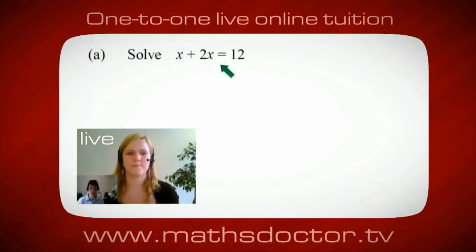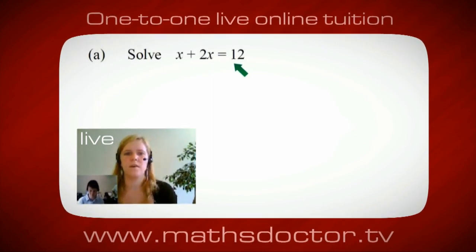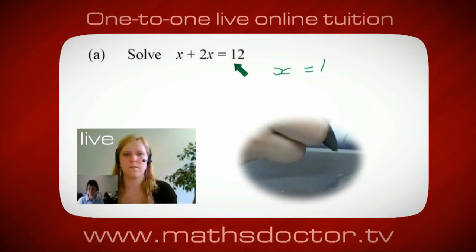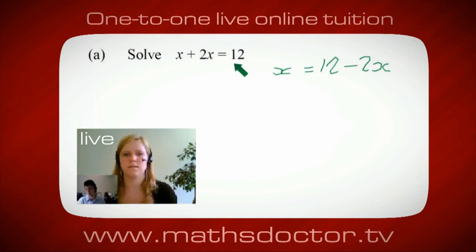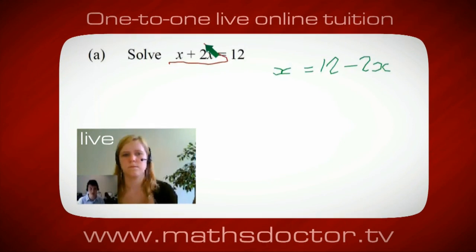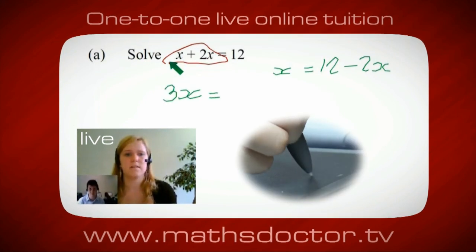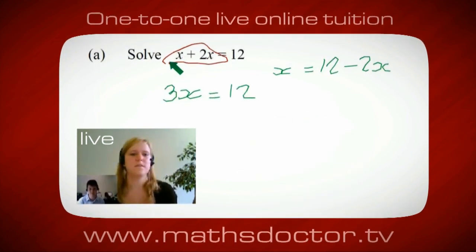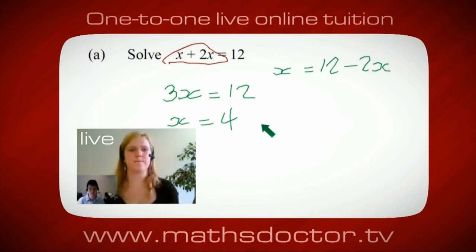Let's have a look at this one: solve x plus 2x equals 12. So what do you think you'd do first? I want x on its own, so I would put x equals 12 minus 2x. A lot of the time we want to get x by itself, but what we want to do first is get all of the x's together. So 3x equals 12, and so x equals 4. Brilliant, spot on.